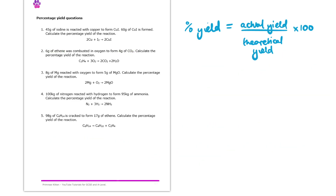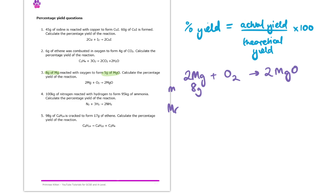Next up, we are told that we have 8 grams of magnesium reacting with oxygen to form 5 grams of magnesium oxide. If we think of that balanced equation, we can work out the number of moles of magnesium that we reacted. The mass of magnesium is 8 grams and the MR of magnesium is 24.3. We don't include the balancing number in front of it — that is simply a balancing number. So we can use these to work out the number of moles of magnesium: I make that to be 0.329.